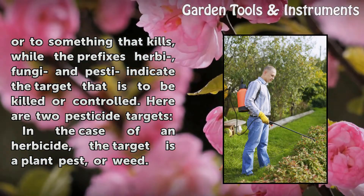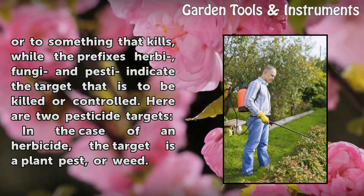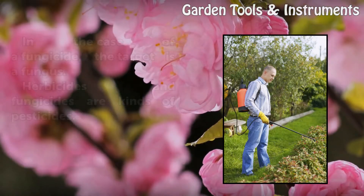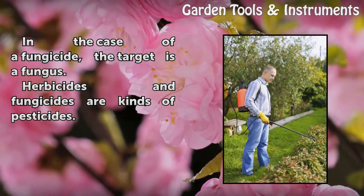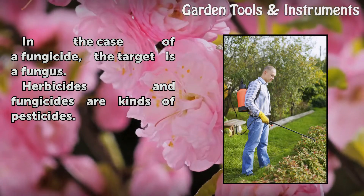Here are two pesticide targets. In the case of an herbicide, the target is a plant pest, or weed. In the case of a fungicide, the target is a fungus.